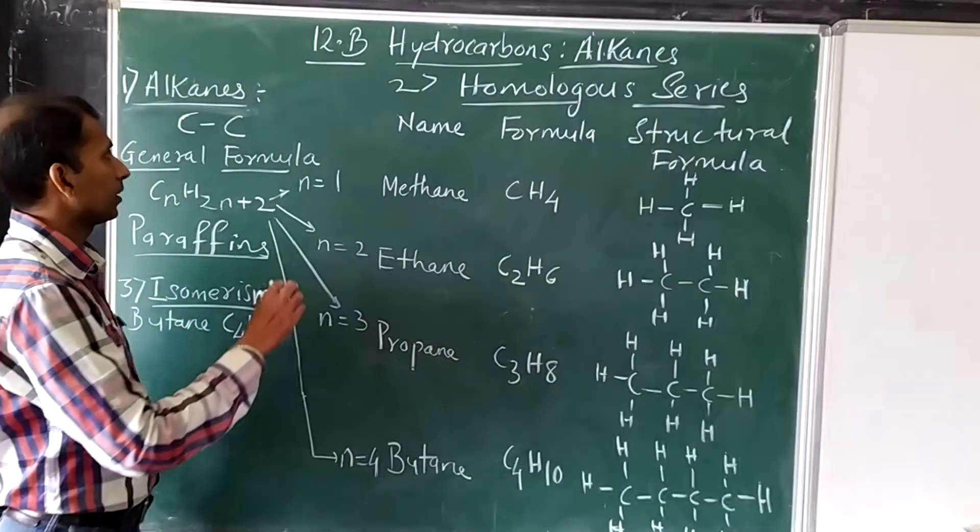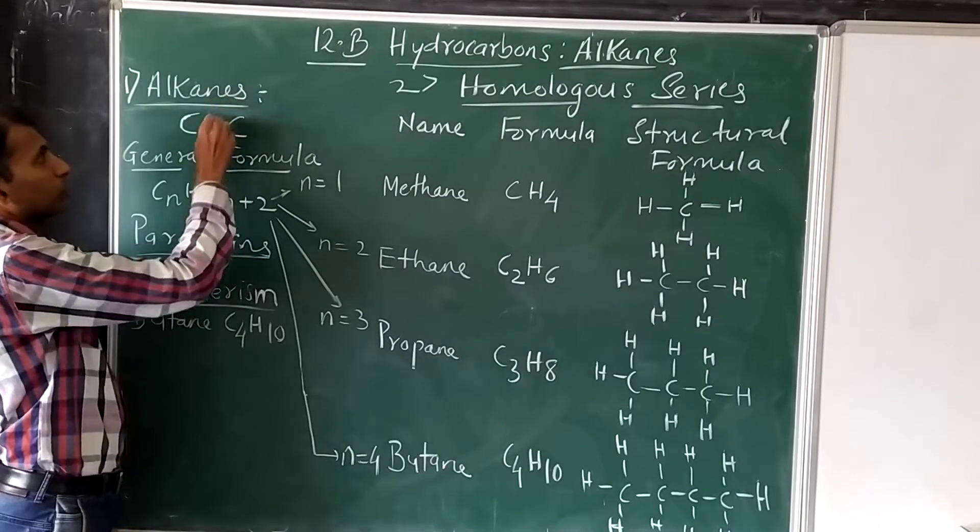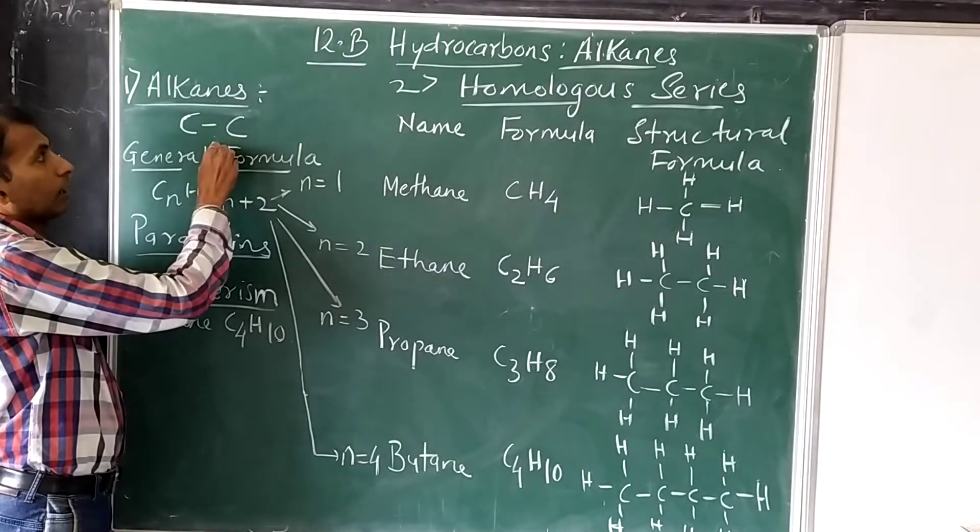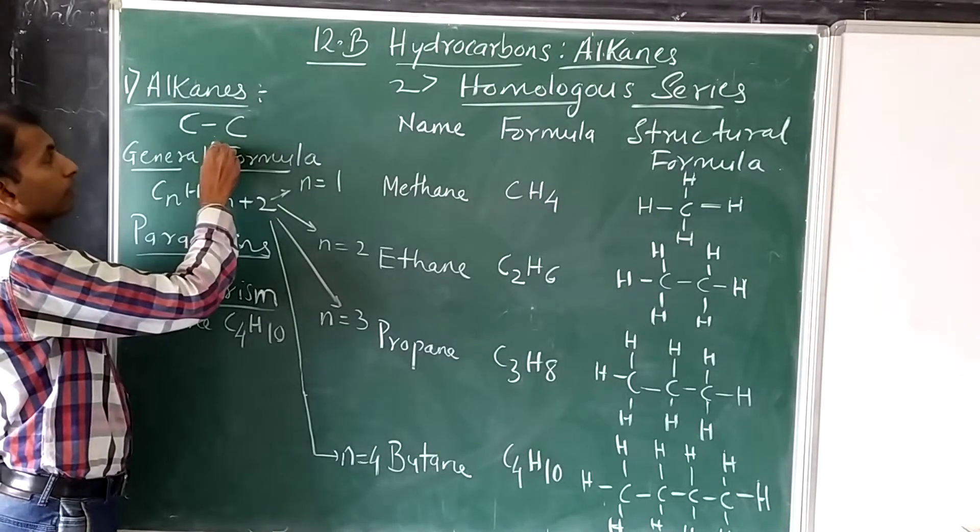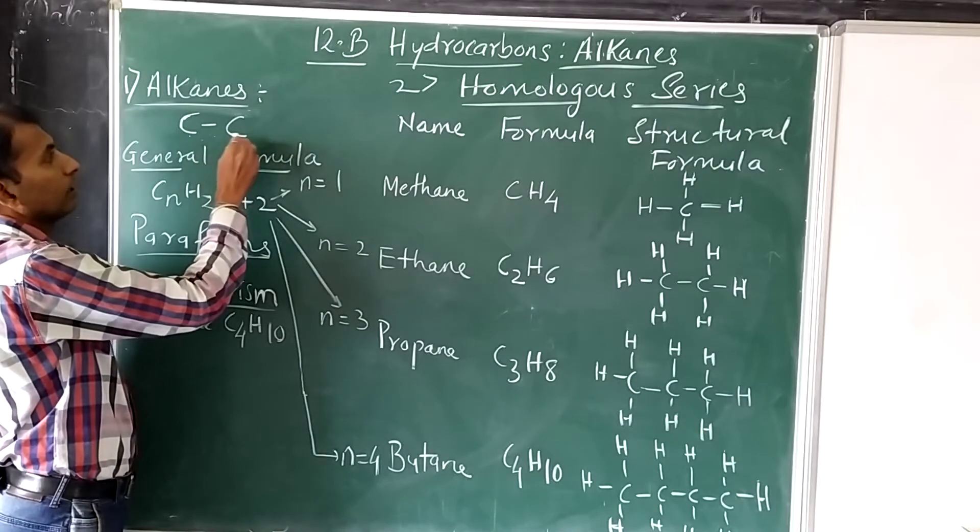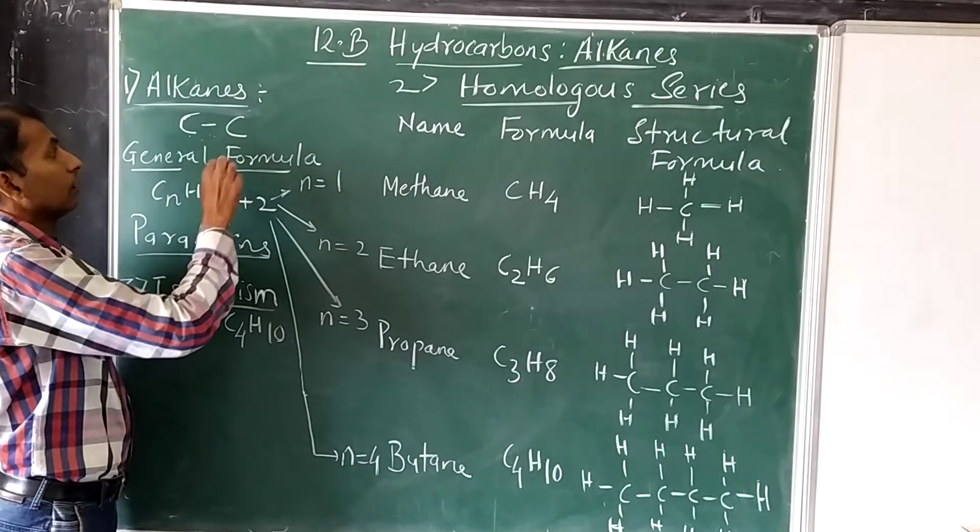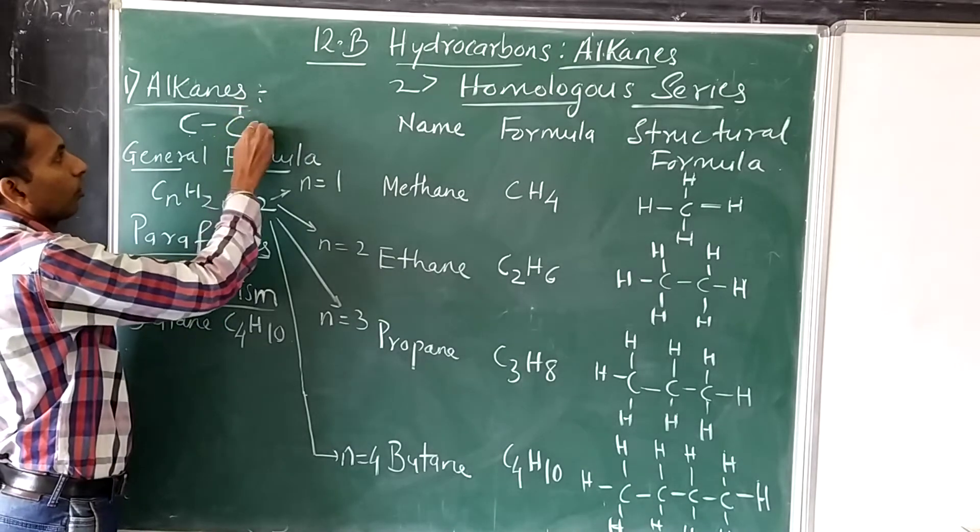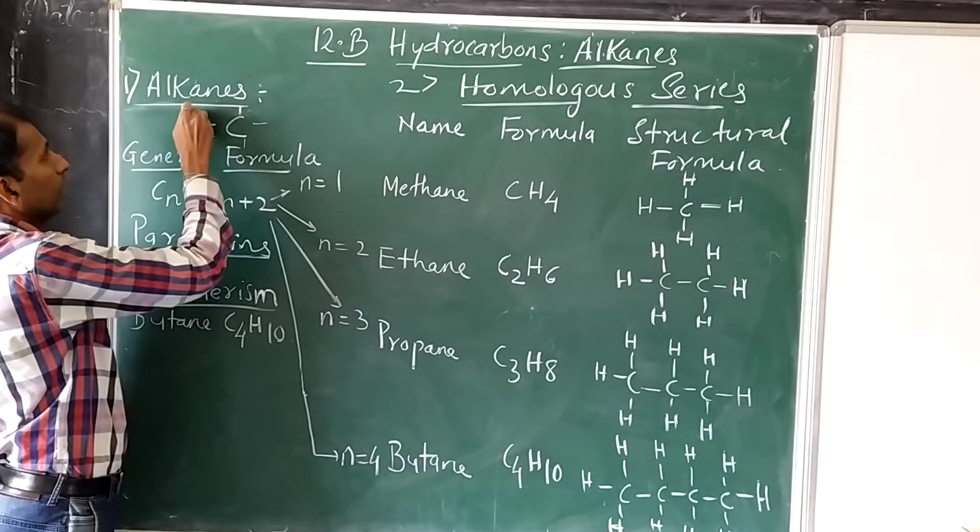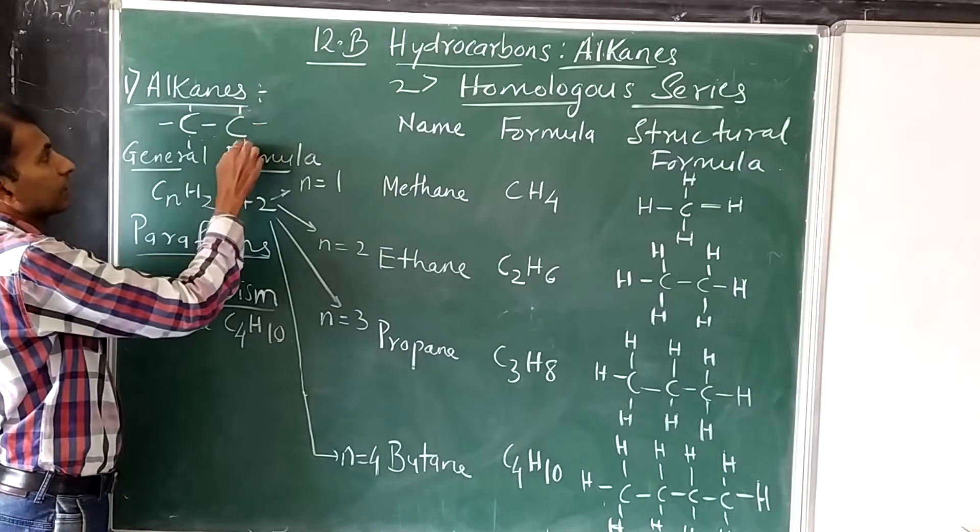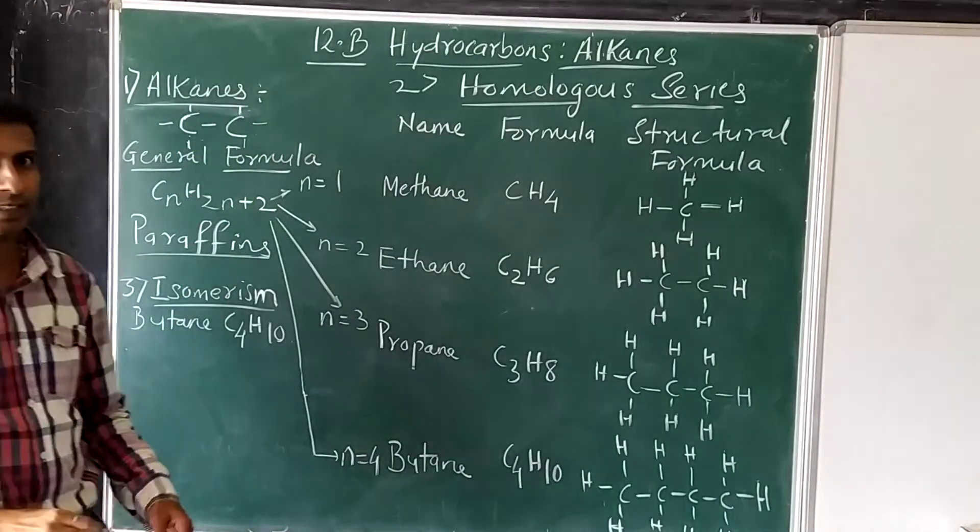As you can see here, a simple structure for alkanes can be shown like this: hydrocarbons which contain carbon-carbon single bonds. That means the four valences of carbons are satisfied by single single covalent bonds, which is called tetravalency.